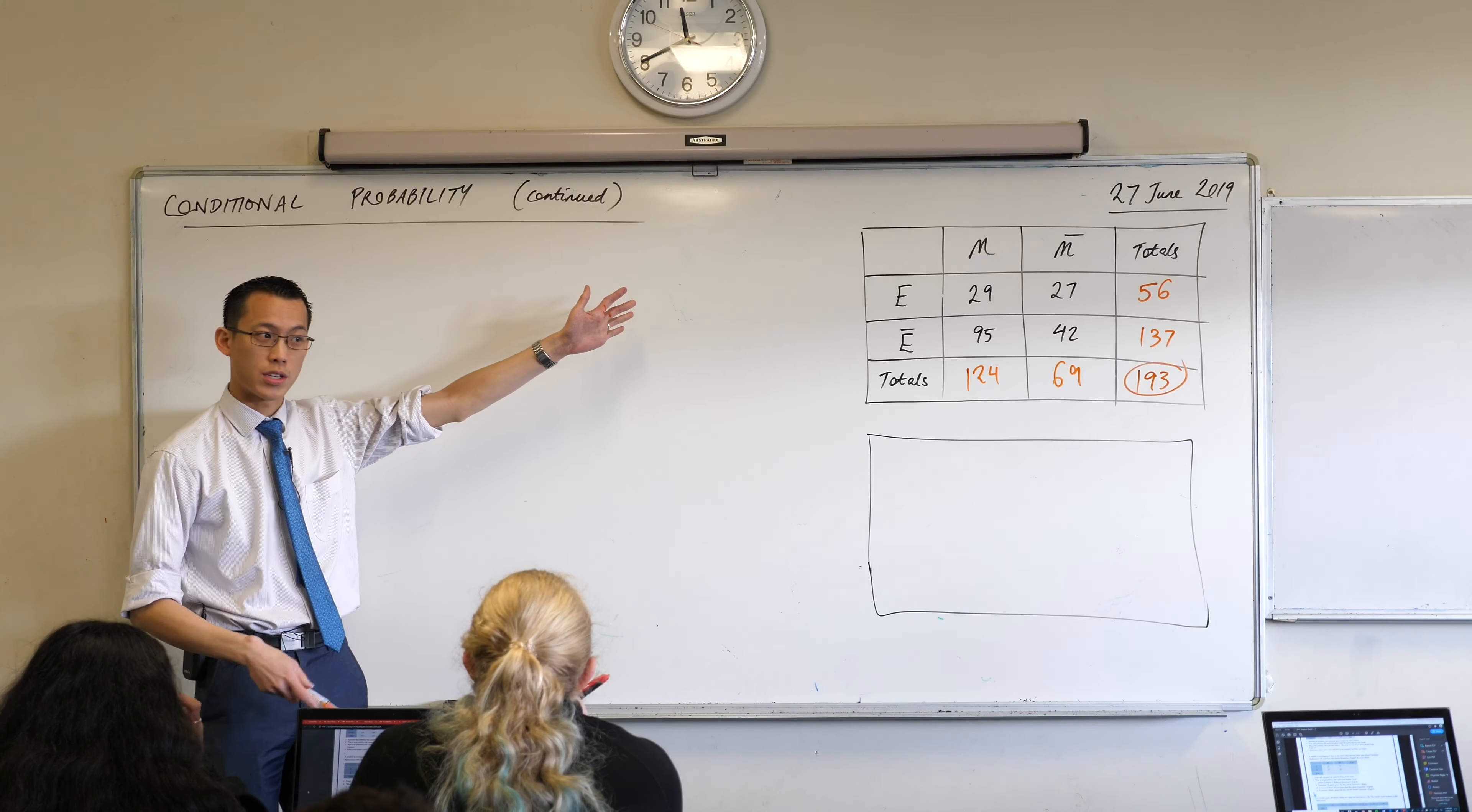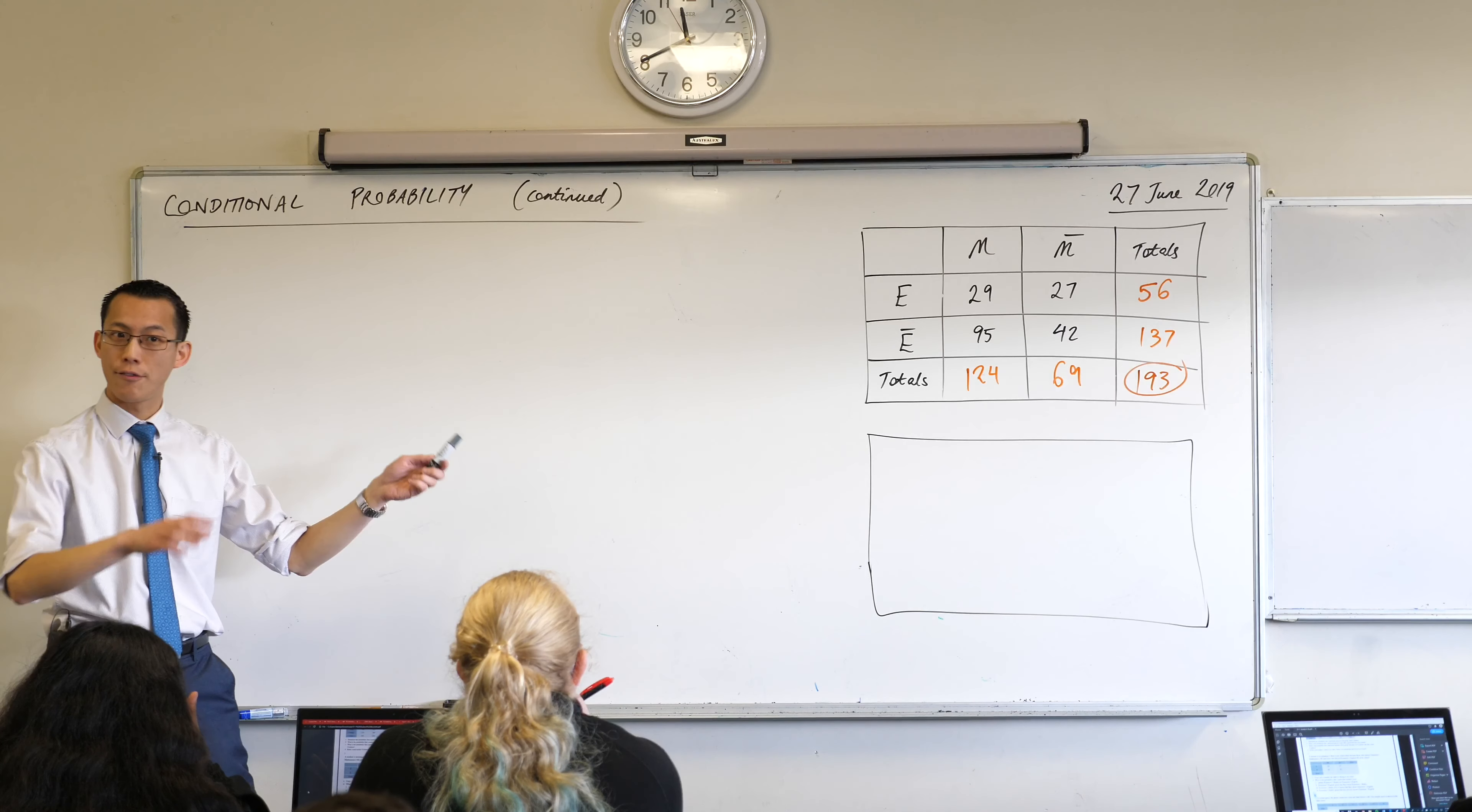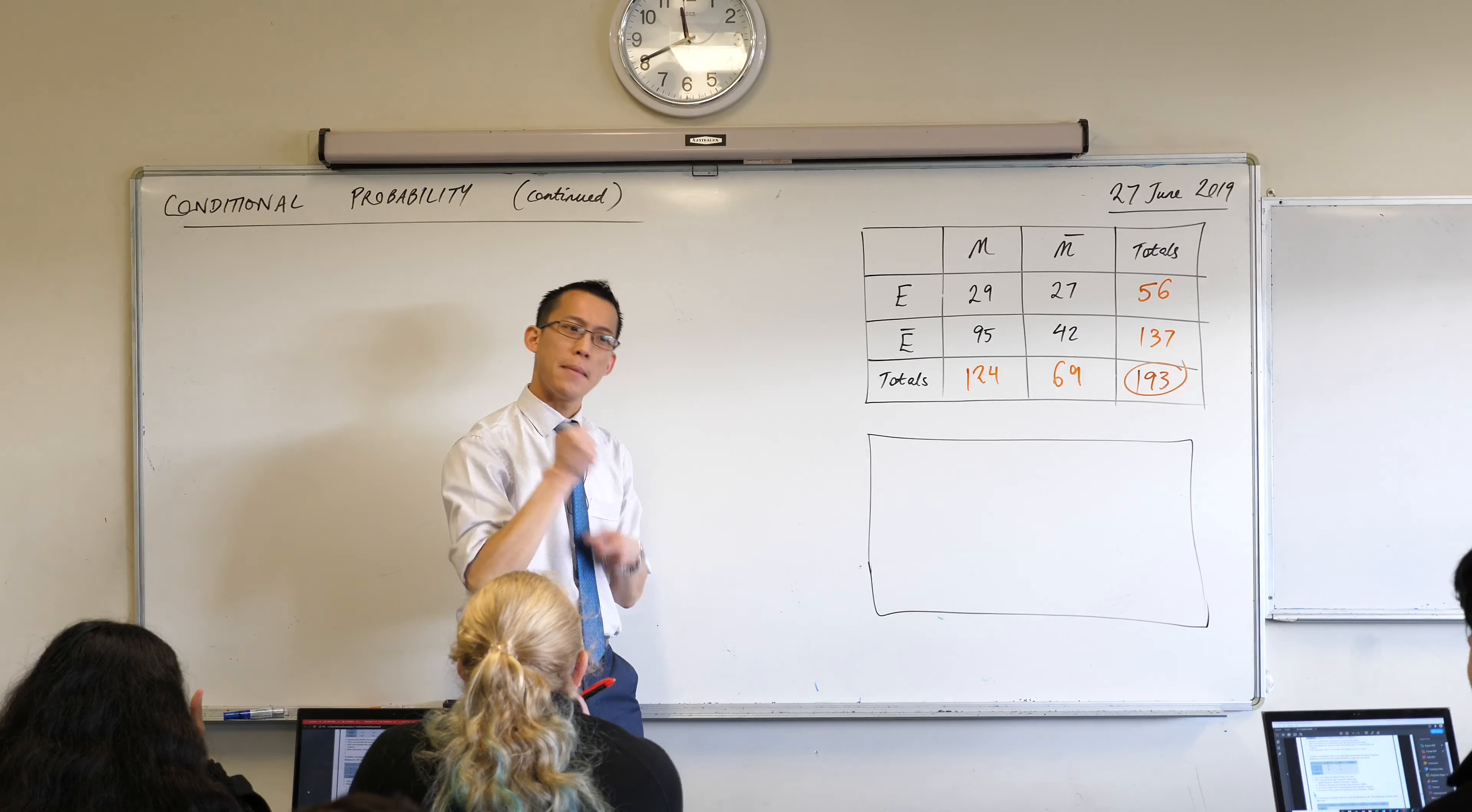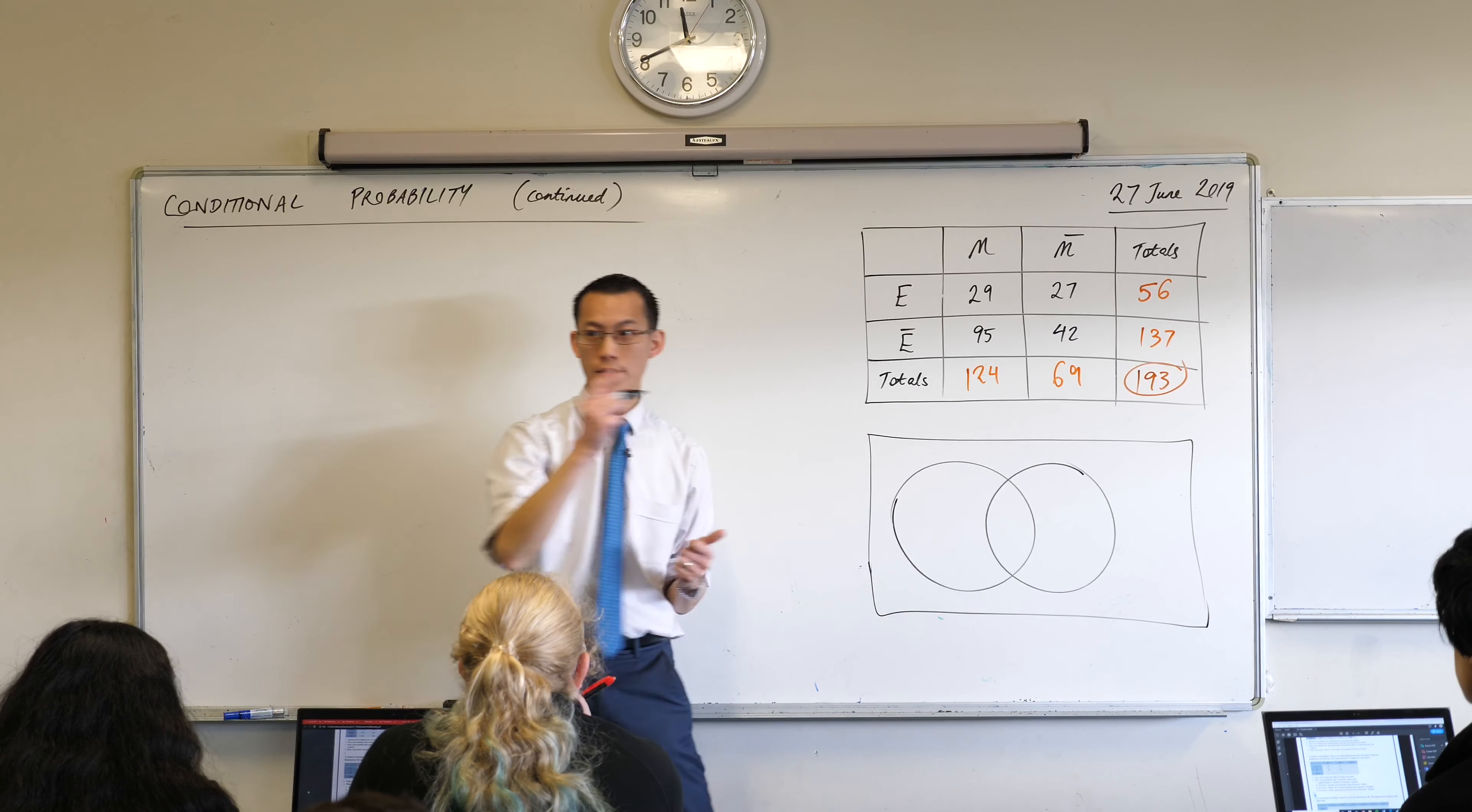Now this is a helpful tool to understand what's going on, but I want to remind you it's not the only way that we can diagrammatically represent what's happening here, and in fact this might be what I'm going to draw down here, and you will need to draw this one, may be more helpful for us as we answer the next part. This is what we call of course a Venn diagram, right?